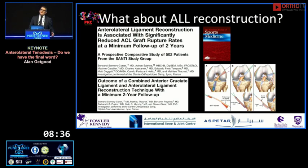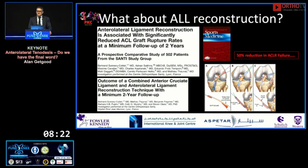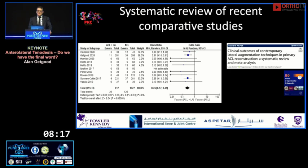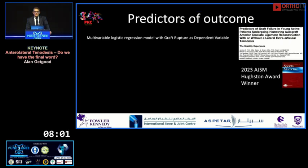Many are thinking: what about ALL reconstruction — it's not all about LET. ALL reconstructions have also performed well, with the Santi group showing a 50% reduction in ACL reconstruction failure, though these are mostly case series rather than randomized trials so there may be selection bias. But systematic reviews of recent comparative studies consistently show a 50% reduction in graft failure, importantly with hamstring tendon autografts combined with an anterolateral procedure.